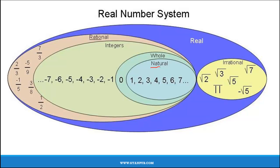First comes the natural numbers. The set of numbers starting from 1, 2, 3 and so on till infinite are called natural numbers.